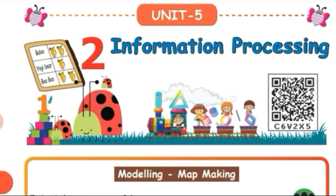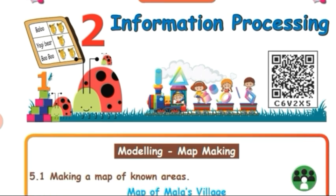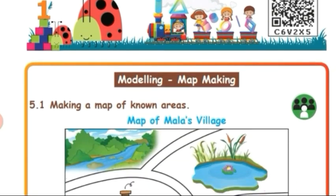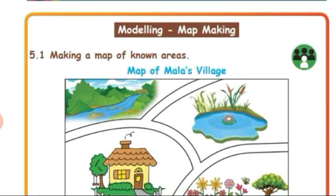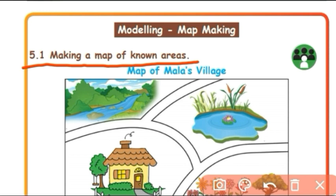Dear students, today we are going to see 3rd standard maths, term 2, unit 5: information processing. In this lesson, we are going to learn about modeling and map making — specifically, making a map of known areas. Let's see how to draw a map of a known place.